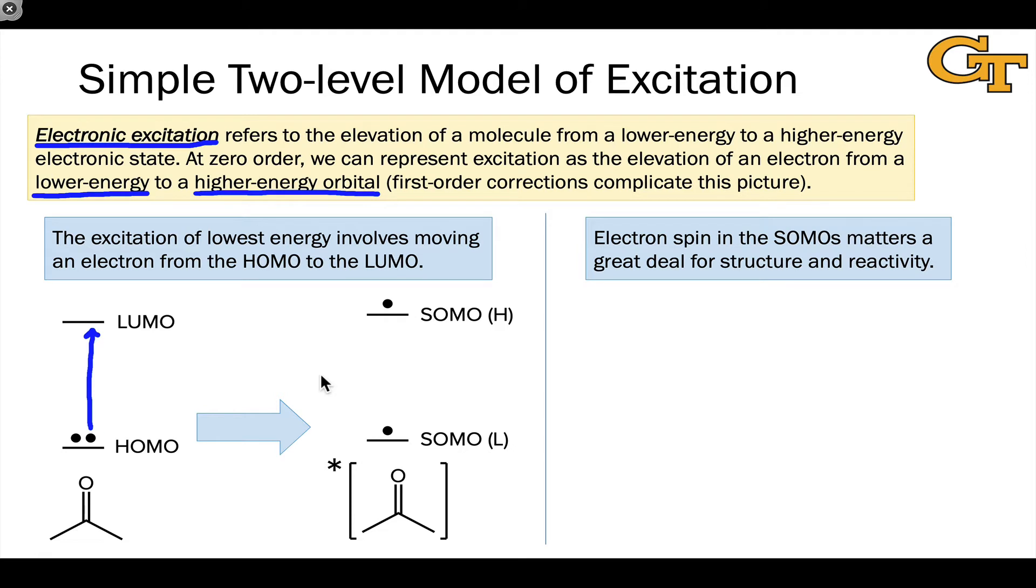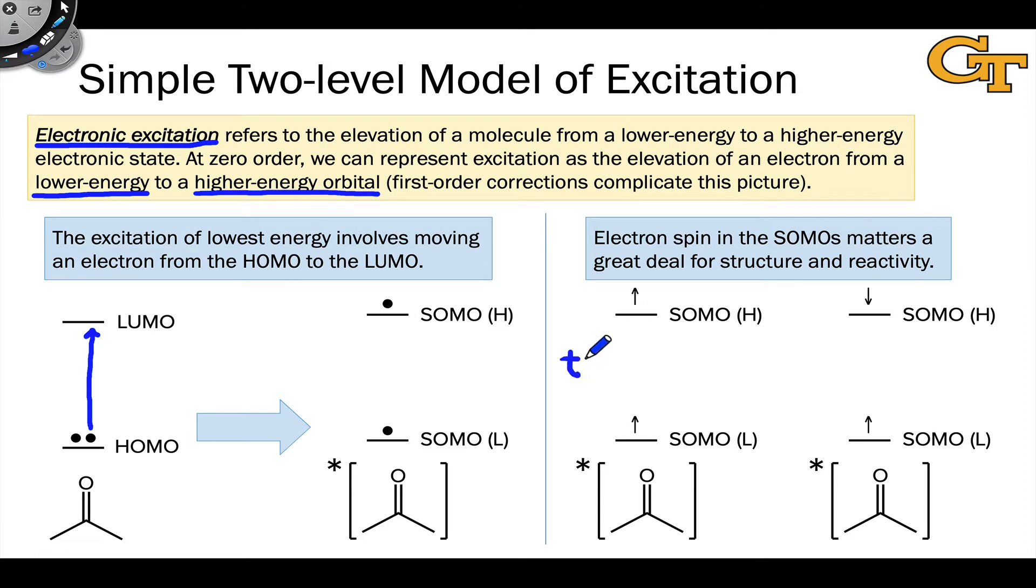Electron spin is also important to consider. There's a difference between the state in which the spins of the electrons in the SOMOs are parallel, which is shown here. Notice the two up arrows. And the state in which the spins are anti-parallel, which is shown on the right. Notice this is an up spin in the SOMO-L and a down spin in the SOMO-H. The state on the left with the spins parallel is called the triplet state. The anti-parallel spin state is called the singlet state.